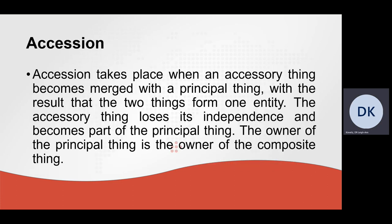Another example of original acquisition of ownership is accession. Accession takes place when an accessory thing becomes merged with a principal thing, with the result that the two things form one entity. The accessory thing loses its independence and becomes part of the principal thing. The owner of the principal thing is thus the owner of the composite thing.